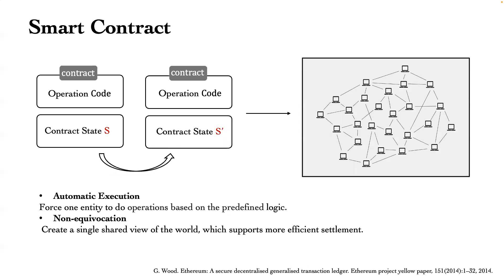A smart contract is a computer program stored on a blockchain and running in a distributed network. The contract has two major properties: automatic execution and non-equivocation. Automatic execution means a smart contract can force one entity to execute operations based on predefined logic. Non-equivocation means each distributed node can hold a global view of the state at a specific height, supporting more efficient settlement.